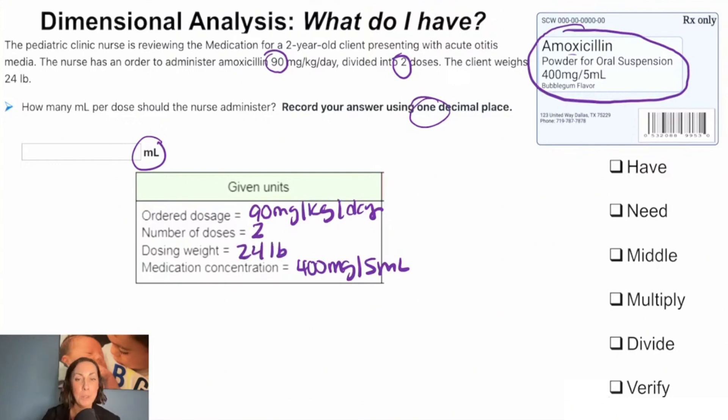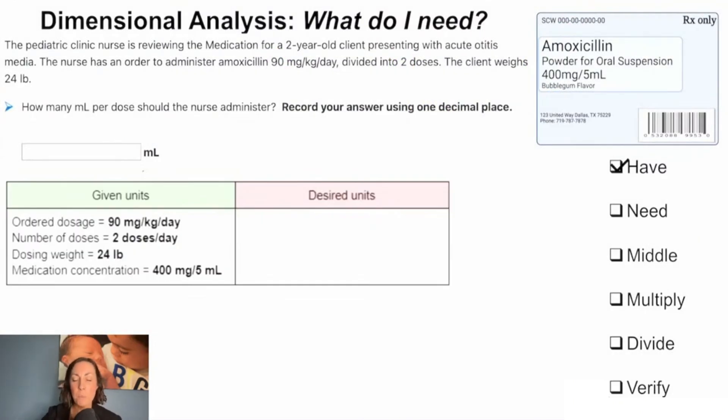Next, let's talk about what we need, and remember we find that to the right of the answer blank. That's going to be how many milliliters we're going to give per dose. So now that we know that, we can start with our given weight and we can do this conversion.